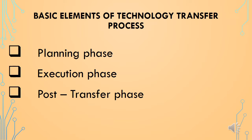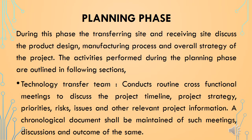There are three basic elements of the technology transfer process: the planning phase, execution phase, and post-transfer phase. During the planning phase, the transferring site and receiving site discuss the product design, manufacturing process, and overall strategy of the project. The technology transfer team conducts routine cross-functional meetings to discuss the project timeline, strategy, priorities, risks, issues, and other relevant project information. A chronological document shall be maintained of such meetings, discussions, and outcomes.